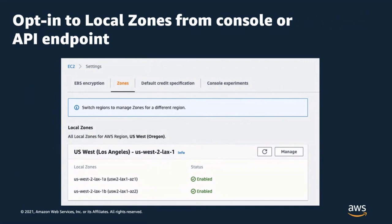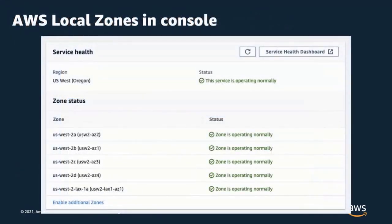AWS Local Zones are accessible from the API endpoint and the console of their parent region. To get started, you first need to enable the Local Zones for your AWS account before you can start deploying resources to them, which you can do from the zone settings section of the EC2 console. Once enabled, Local Zones look and behave similarly to any other AZ. The LA Local Zone is visible as US West 2 LAX 1A along with other AZs in the EC2 console — US West 2 tells you the parent region, and LAX tells you it is an extension physically located in the Los Angeles metro area.